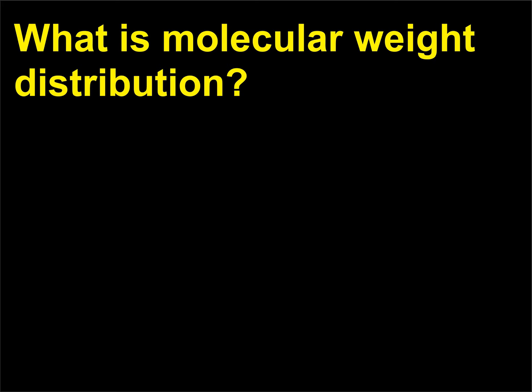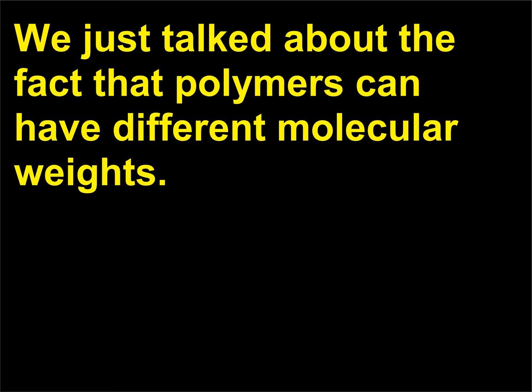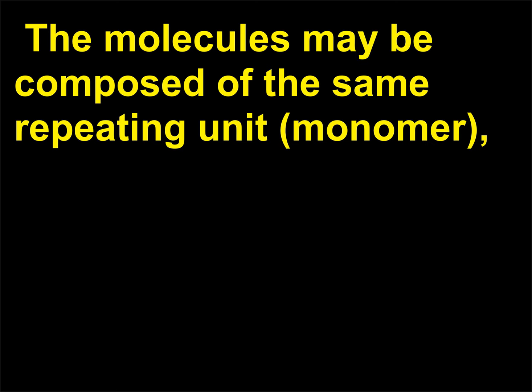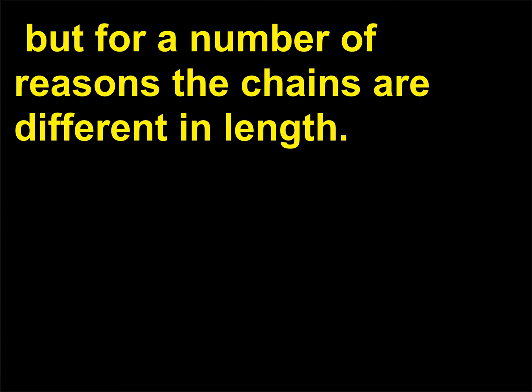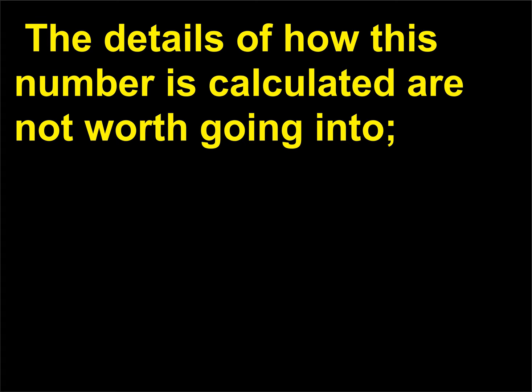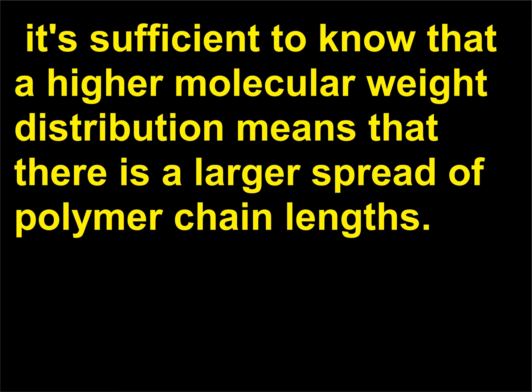What is molecular weight distribution? Polymers can have different molecular weights. Oftentimes in reactions that make polymers, a range of molecular weights are produced. The molecules may be composed of the same repeating unit or monomer, but for a number of reasons the chains are different in length. This distribution of lengths is important to a number of polymer properties. A higher molecular weight distribution means that there is a larger spread of polymer chain lengths. A distribution of 1.0 would mean that every single polymer chain has the exact same molecular weight.